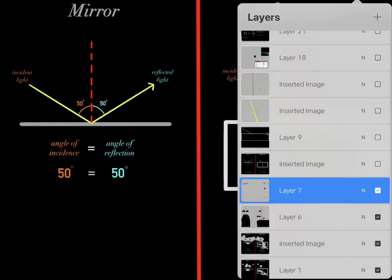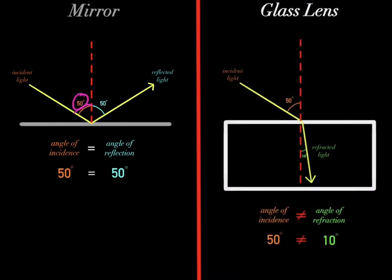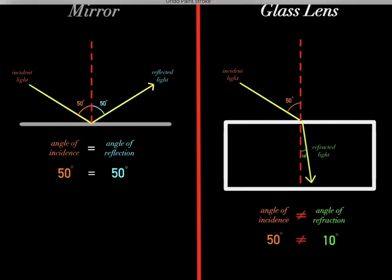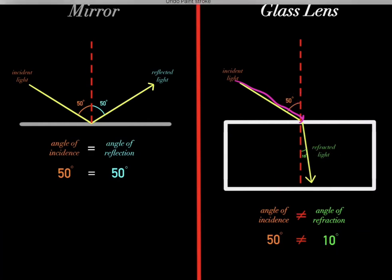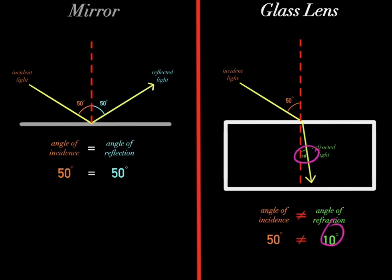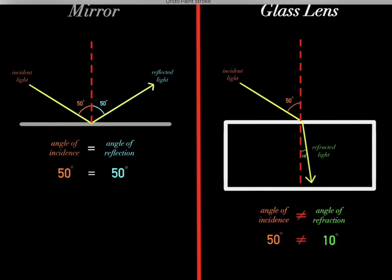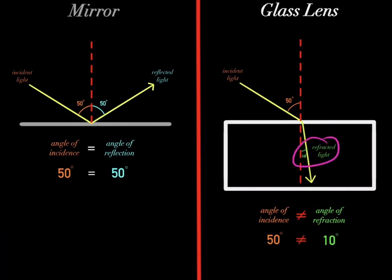For example, let's say the angle of incidence was 50 degrees. Therefore, the angle of reflection will also be 50 degrees, because the angle of incidence always equals the angle of reflection. However, if the angle of incidence was 50 degrees, what would the angle of refraction be? In this situation, the angle of refraction is 10 degrees. So in this example, the angle of incidence does not equal the angle of refraction.